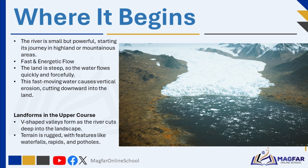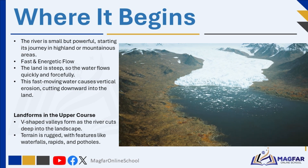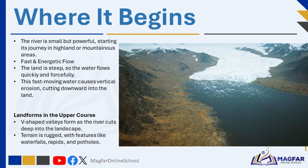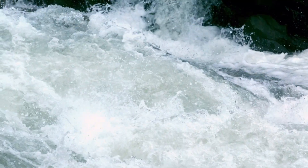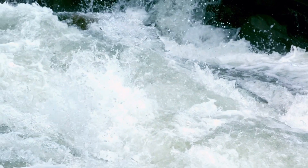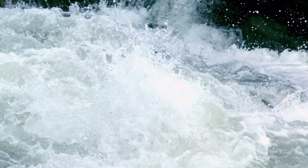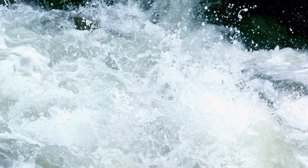The upper course of a river is the first stage in its journey, starting close to the source, which is usually located in highland or mountainous areas. At this point, the river is small but very energetic due to the steep gradient of the land. The flow of water is fast, turbulent, and powerful, giving the river a lot of energy to erode the land, especially in a vertical direction — this means the river cuts downward into the landscape rather than sideways.